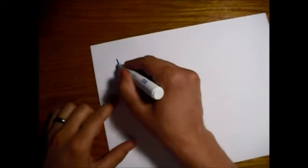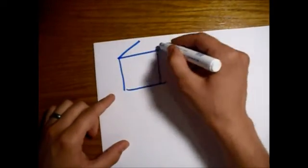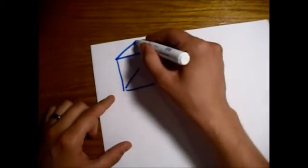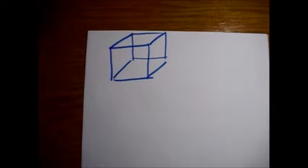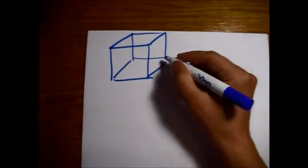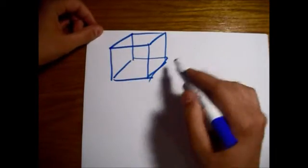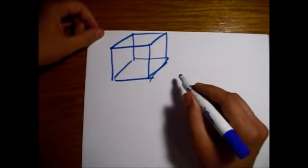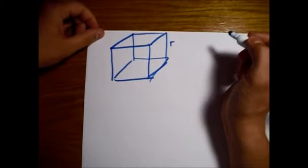All right, so we're going to look at a cube made out of resistors, or made out of wire or something like that, but each, all right, so this is an empty cube. These are just wires, and each one of them has a resistance of small r.